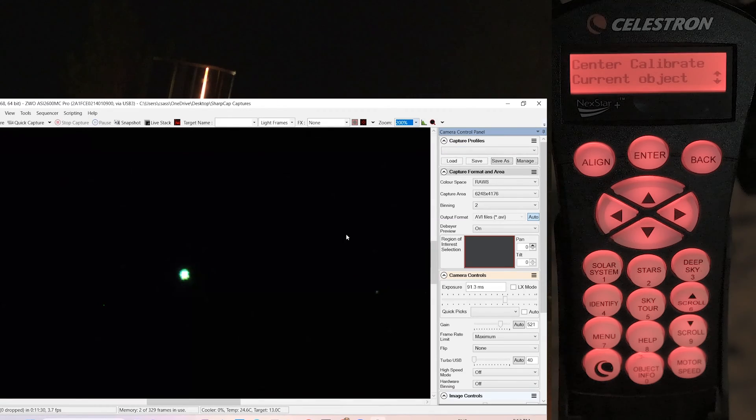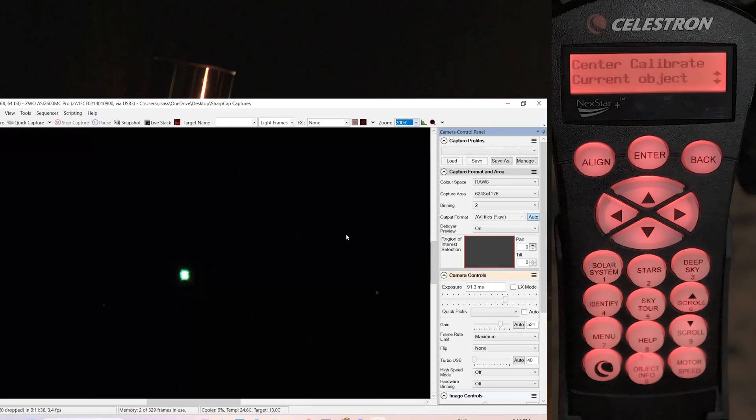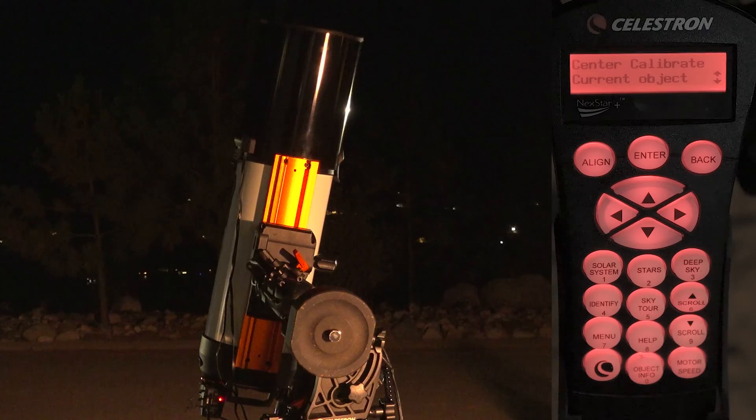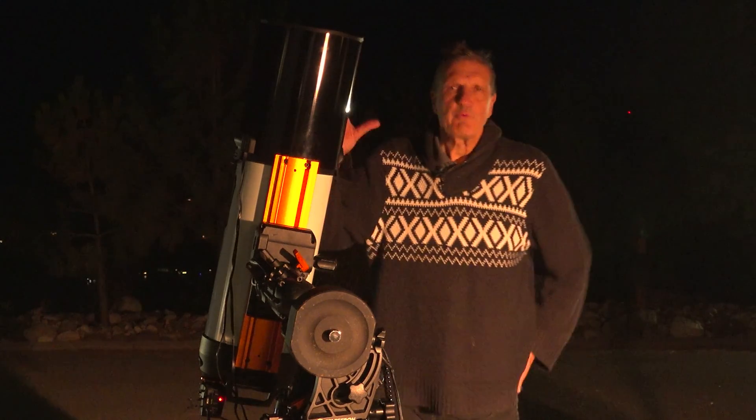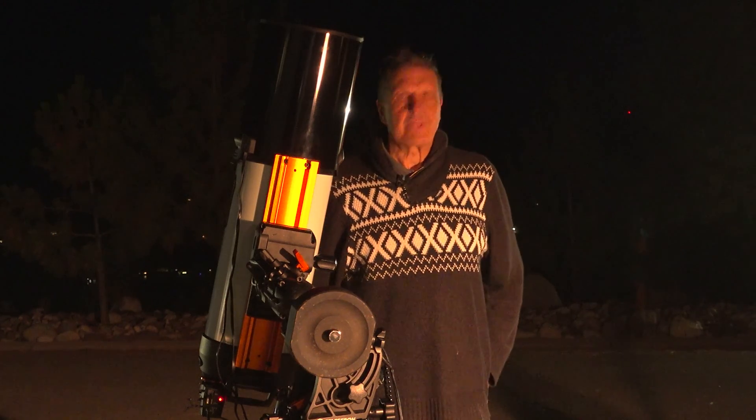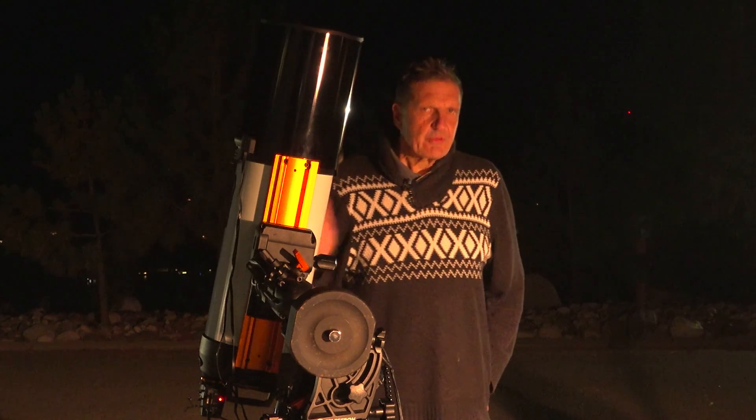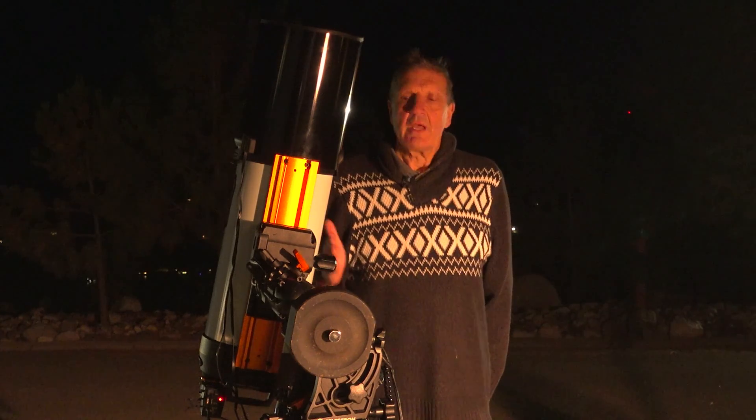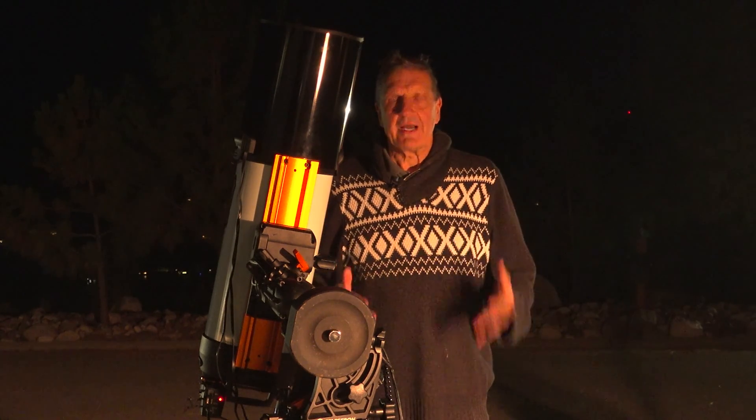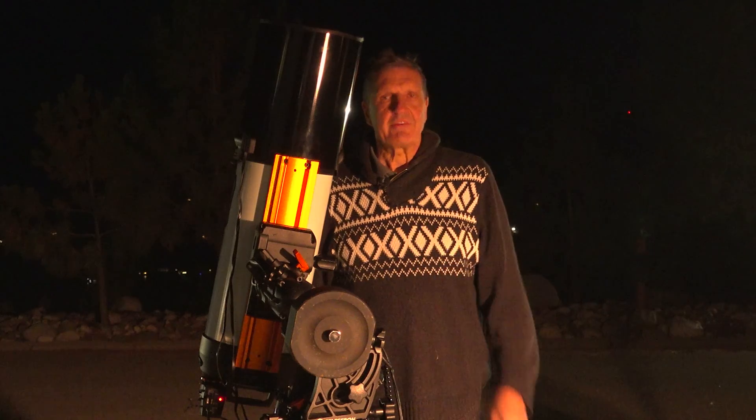So the final step that you may want to take, and which I can really recommend, is to do auto alignment again. And the reason is very simple. Center calibration hopefully has to be done only once, as long as you don't move your camera too much and the StarSense Autoguider. But because of the offset, your auto align is now slightly offset too. So just rerun the auto align and everything should be nicely centered.